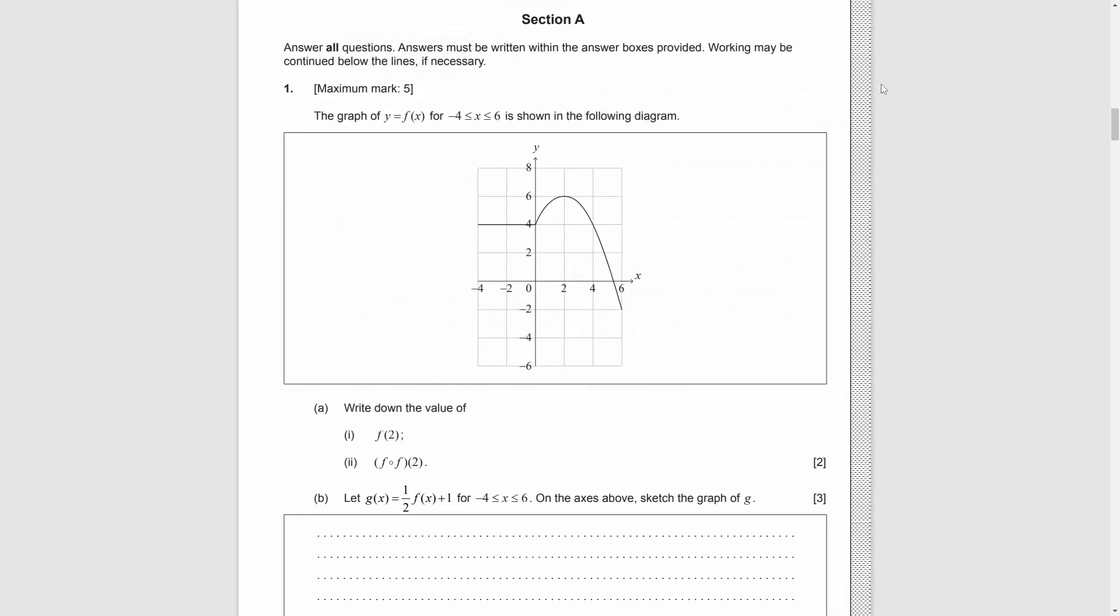First, we look at Section A, Question 1. A graph of f(x) is shown in the diagram. In part A, we need to find F(2). That means we need to find the y coordinate of the graph when x is 2. So for x is 2, the point of the graph lines here and the y coordinate is 6.